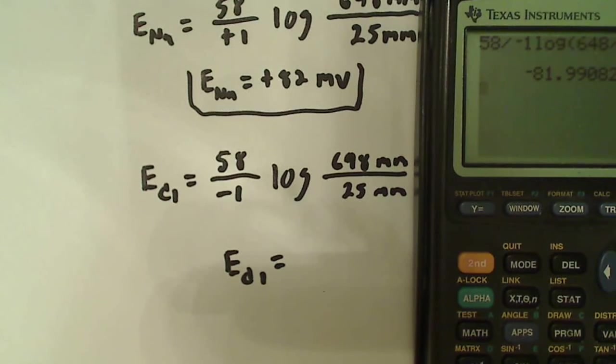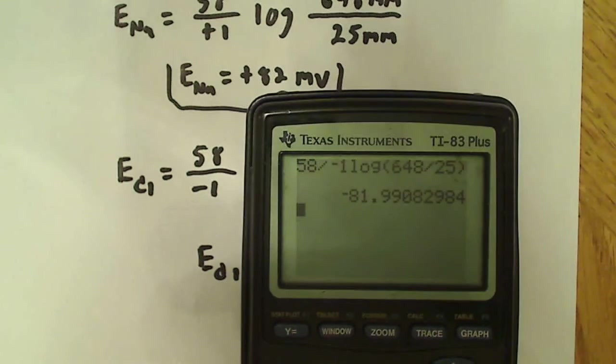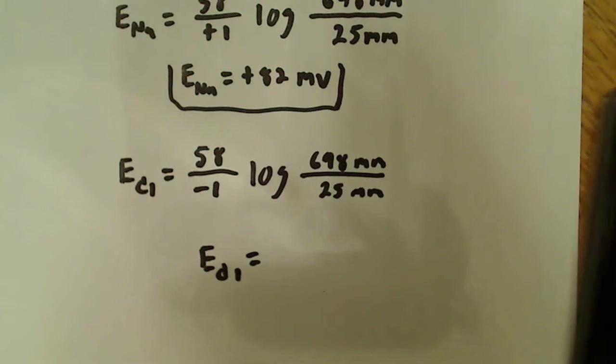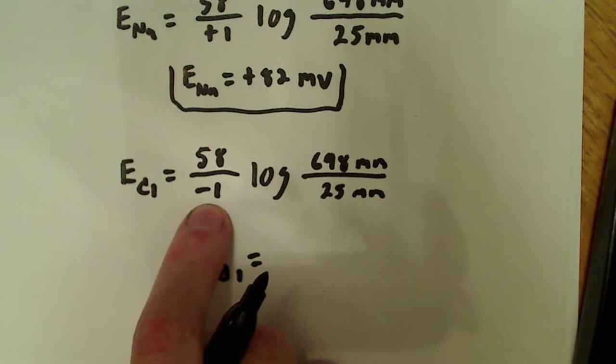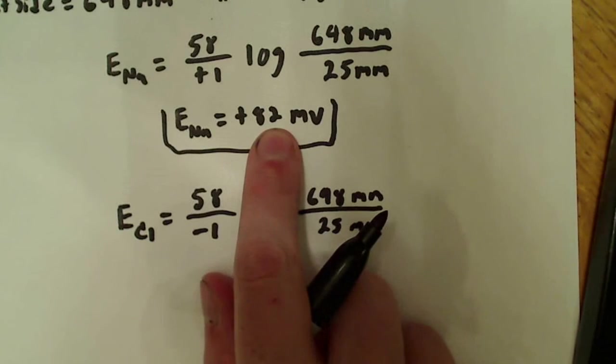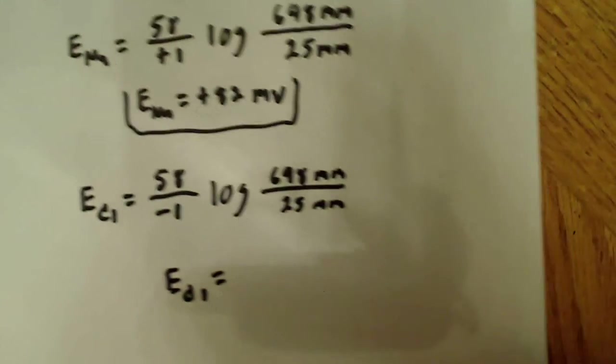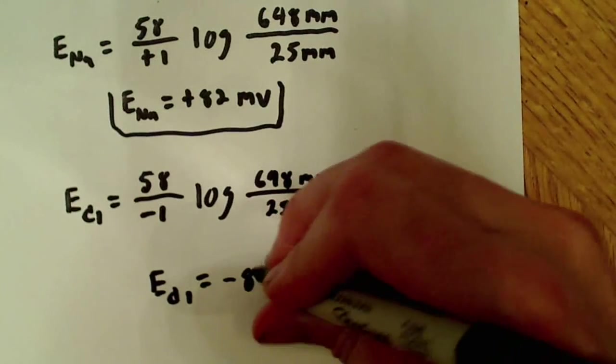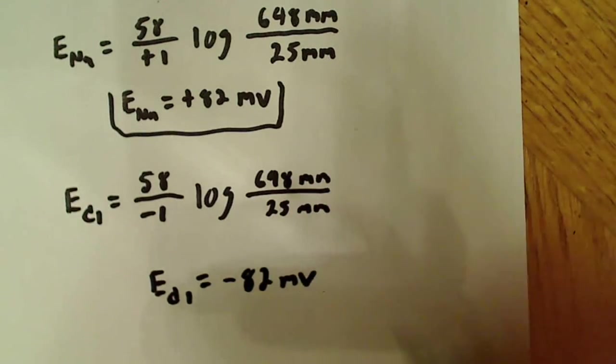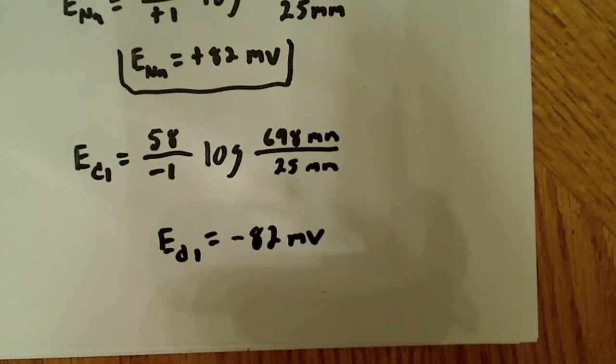And, essentially, you could have guessed, probably, without doing this, that because those numbers are the same, and the only difference we had here was this negative 1, was that this is going to be the exact same value as it is for sodium, only with a negative charge. So, this will say, this will be negative 82 millivolts, okay? So, negative 82 millivolts, there will be no net movement of Cl, or chloride, across the semipermeable membrane.